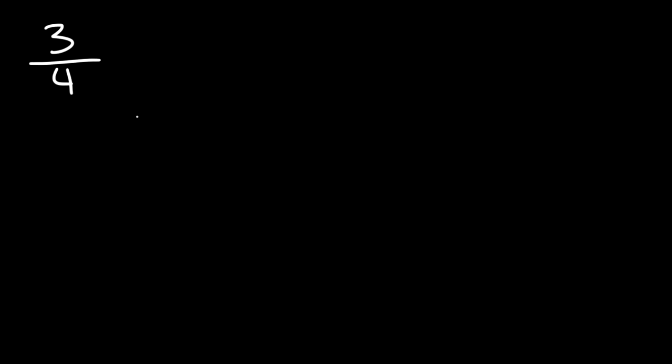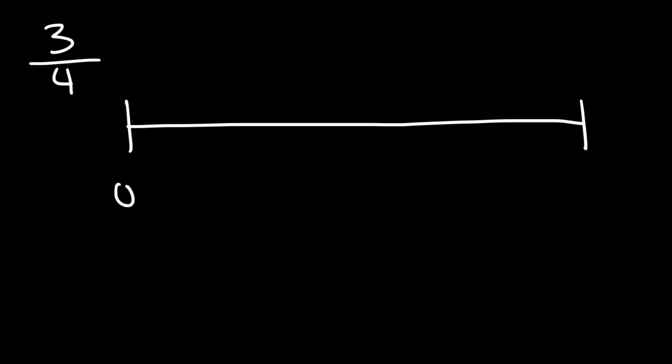In this tutorial we're going to talk about how to place a fraction on a number line. Let's say we want to put 3 over 4 along a number line that ranges from 0 to 1 in value. So where on this number line should we place 3 over 4?